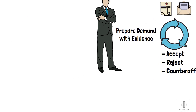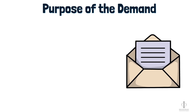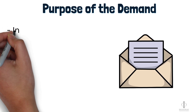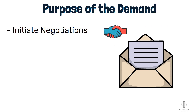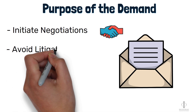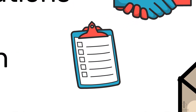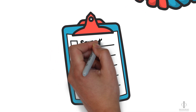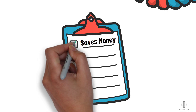Now that we understand what a demand letter is and how it works, let's talk about the purpose of sending a demand letter. First, the demand letter kicks off the negotiation process by providing the other side with an offer to settle. The demand letter also gives the parties a chance to settle the case and avoid litigation. This approach has several benefits. For one, it can save money — if we can avoid extensive litigation and heavy case costs, we may be able to put more money in your pocket.